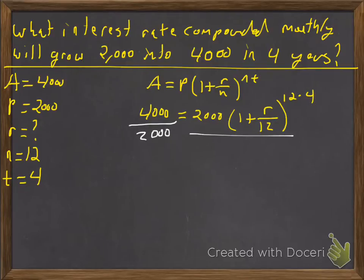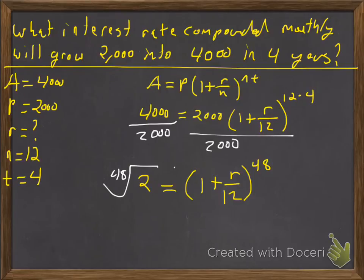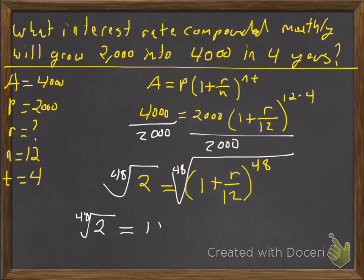First thing we're going to do is we're going to isolate the base. So we're going to divide both sides by 2000. So we have 2 is equal to 1 plus r over 12 raised to the 12 times 4, raised to the 48th power. So to undo the 48th power is to take the 48th root of both sides. We're going to take the 48th root of both sides. So we have the 48th root of 2 is equal to 1 plus r over 12.